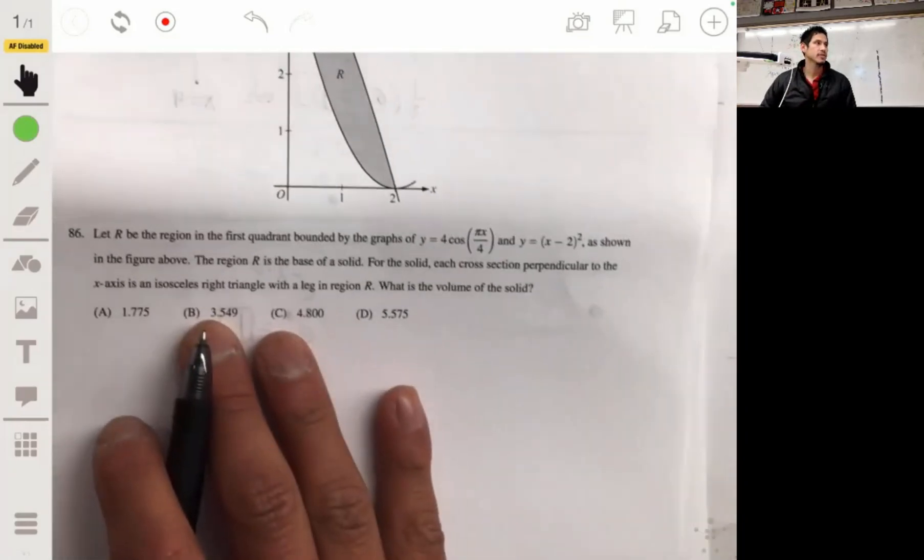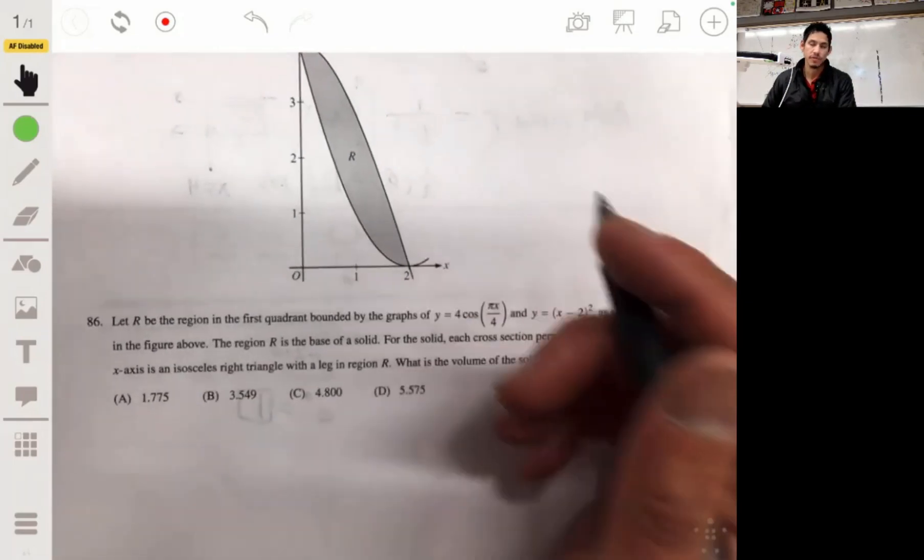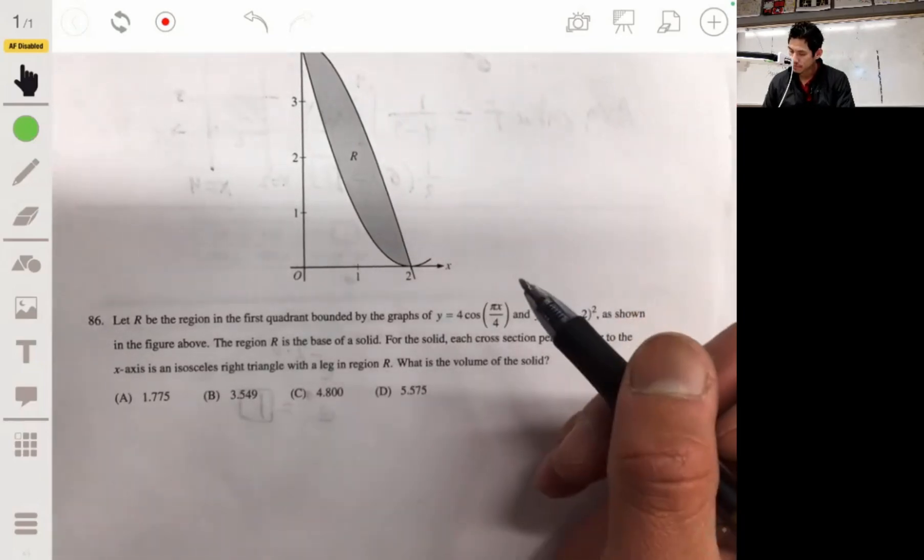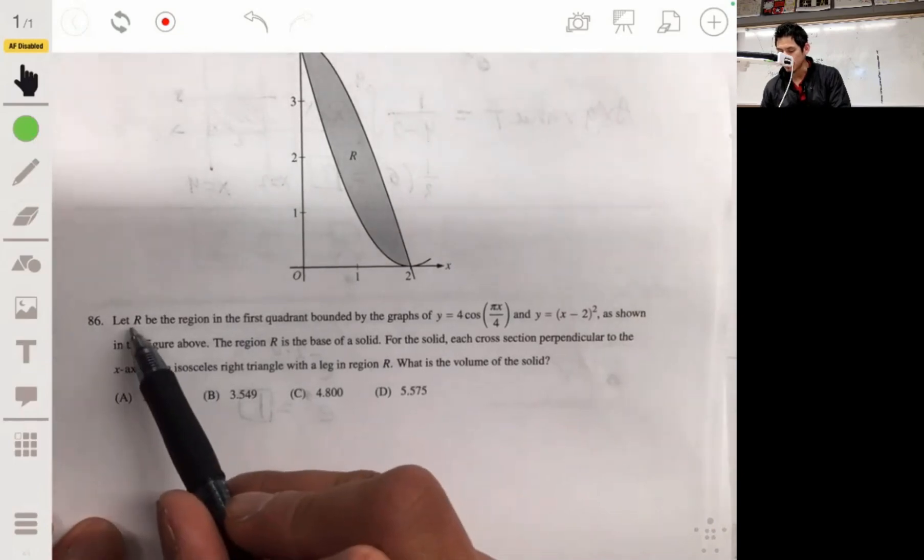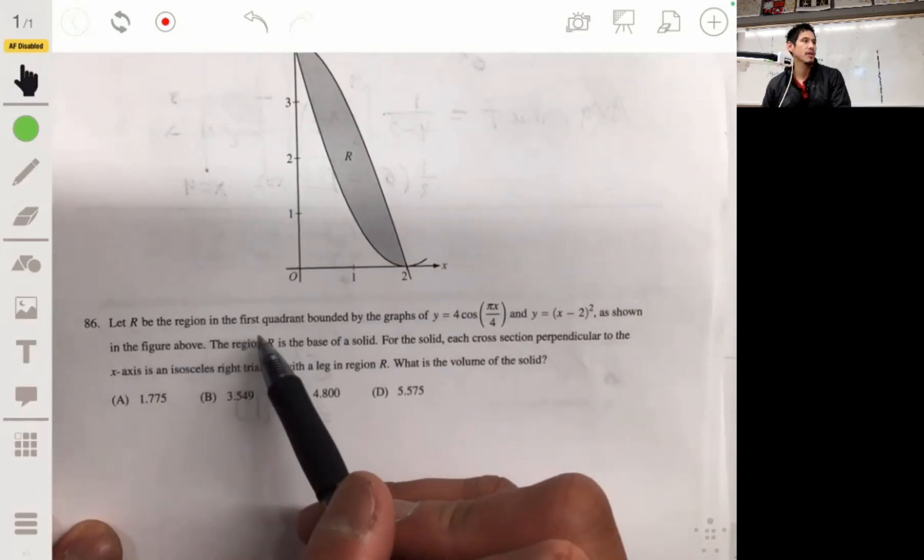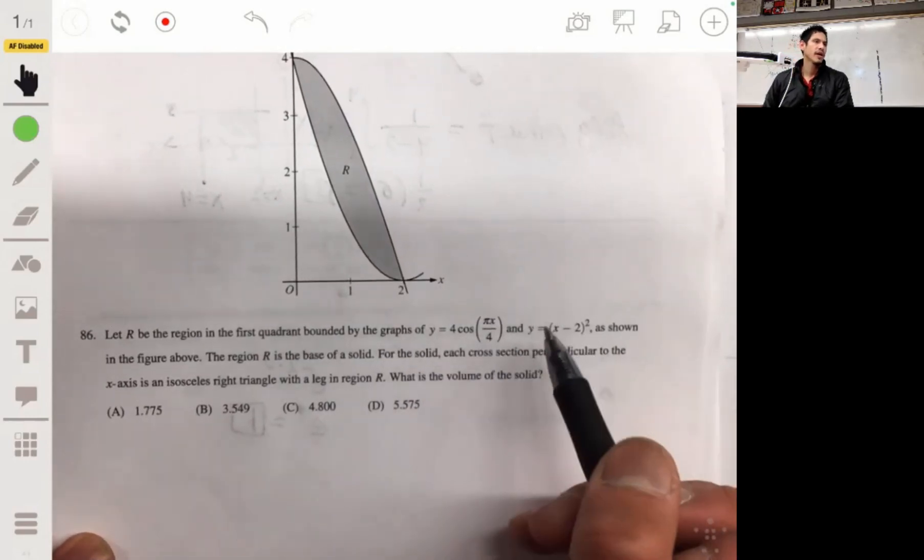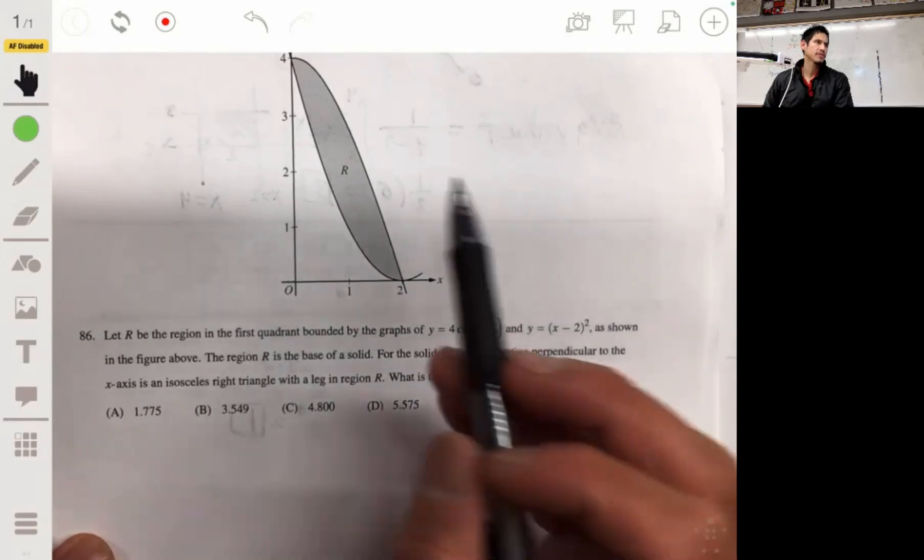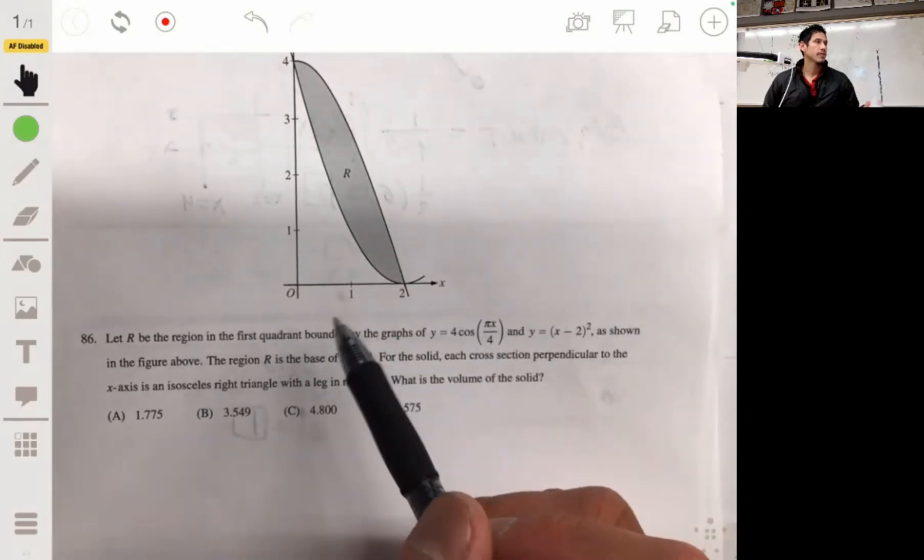Alright, problem 86. Let R be the region in the first quadrant bounded by the graph y equals 4 cosine of pi x over 4 and y equals (x minus 2) squared, shown here. This is the region R, the base of a solid.